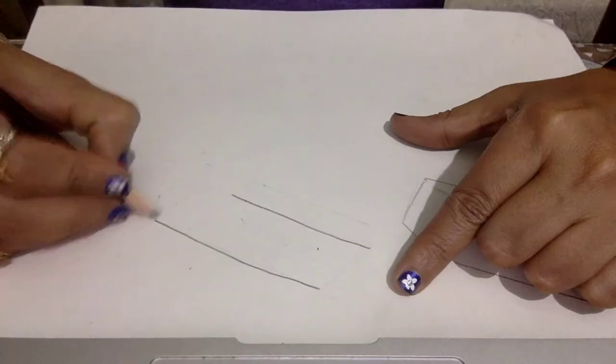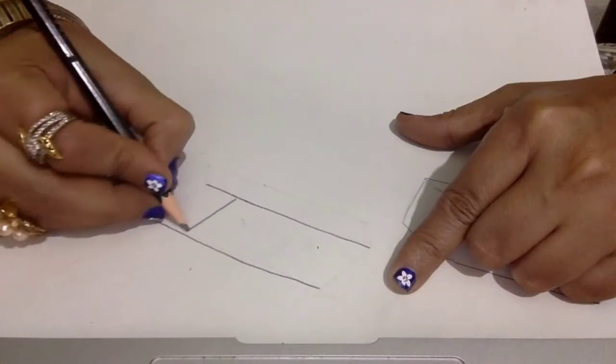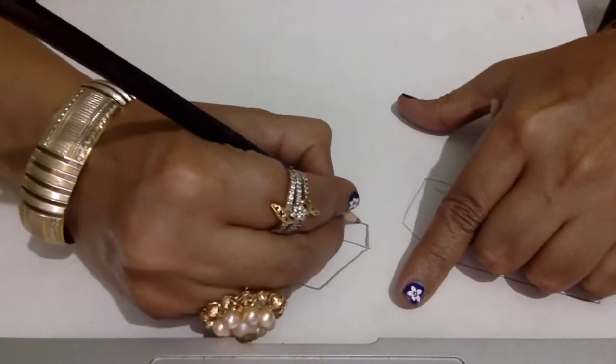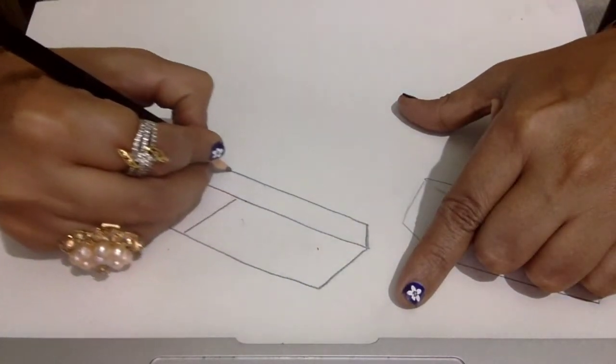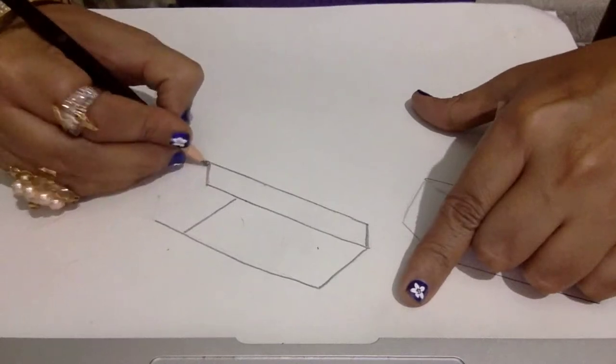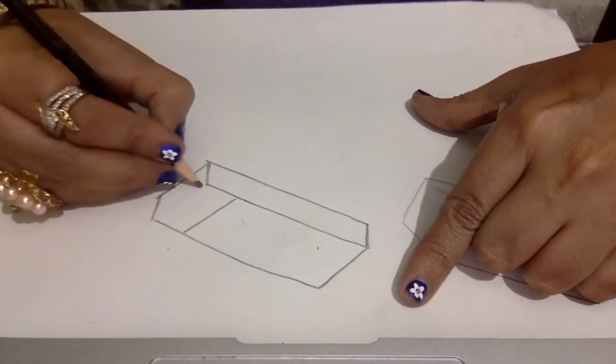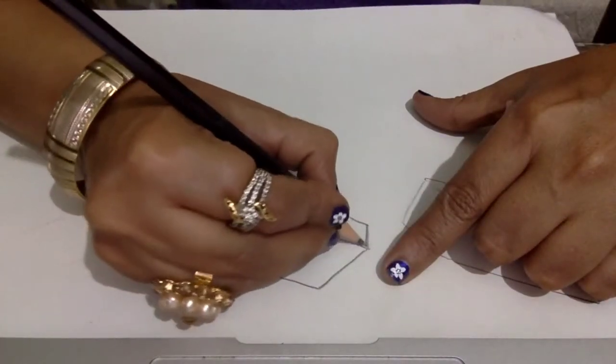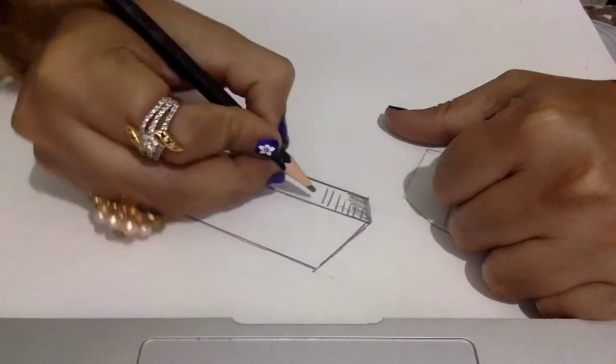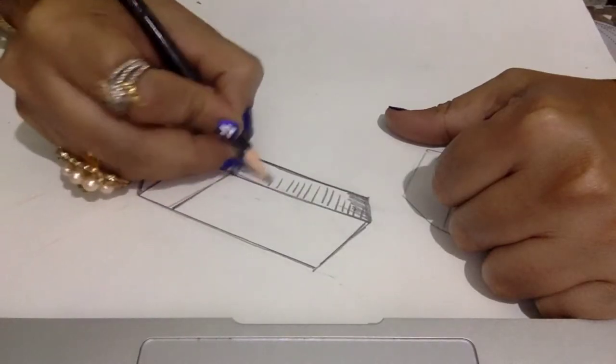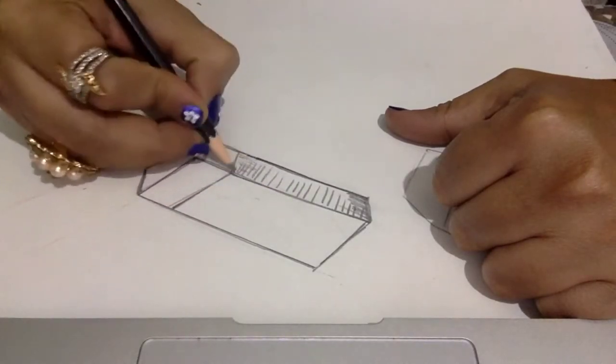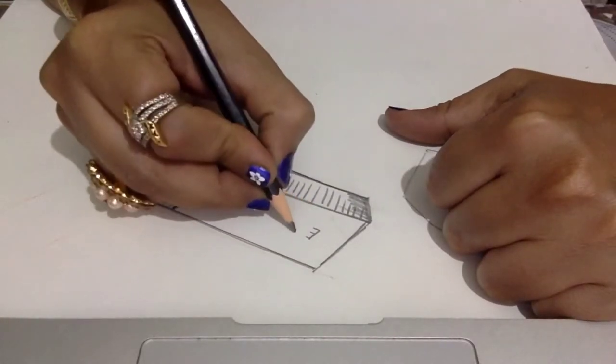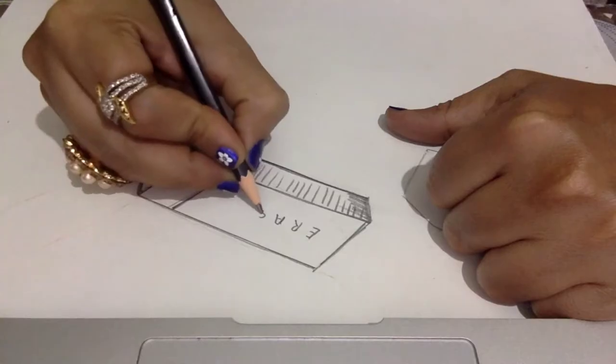Next, the other form of eraser. Give two parallel lines followed by a third one. Then join all these lines and the eraser is ready. You can give some shading, even write 'eraser' on it, so it will be more clear.